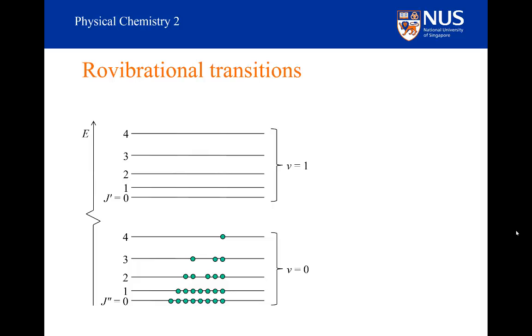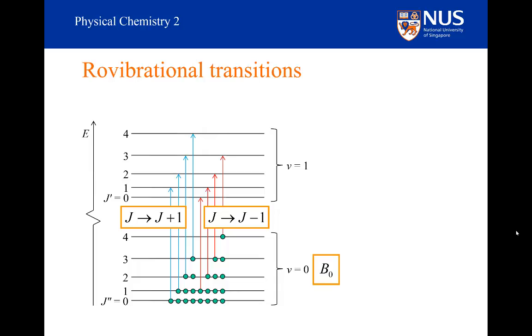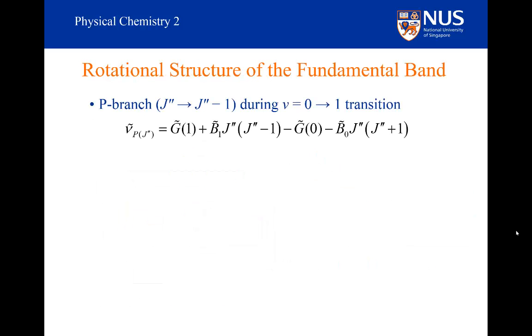Once again, here are our rovibrational energy levels associated with the fundamental band. Again, this is my R branch where J increases by 1, and this is my P branch where J decreases by 1. The rotational structure in the v equals 0 state are associated with the B₀ rotational constant, but the rotational structure in the v equals 1 state are associated with the B₁ rotational constant, which is going to be slightly smaller.